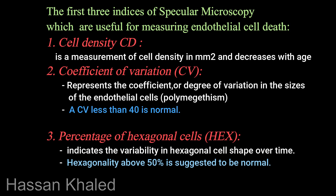The first three indices of specular microscopy useful for measuring endothelial cell health are: firstly, cell density, which is a measurement of cells per millimeter square and decreases with age; secondly, the coefficient of variation, representing the degree of variation in sizes of endothelial cells — polymegethism, which is normal when less than 40; and percentage of hexagonal cells, normal when above 50%, indicating variability in hexagonal cell shape over time.